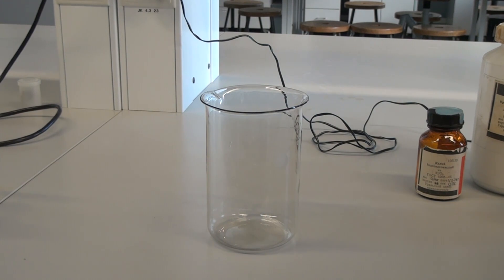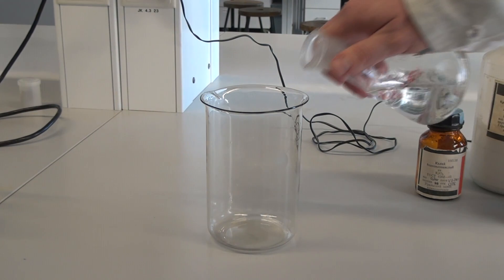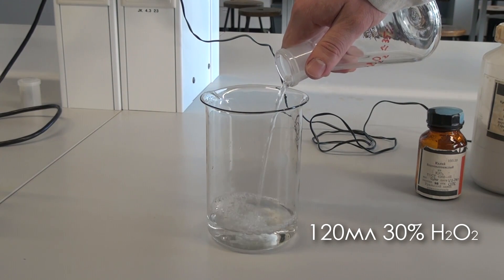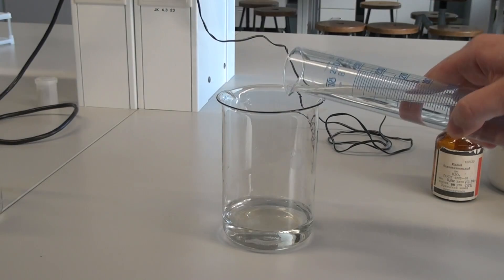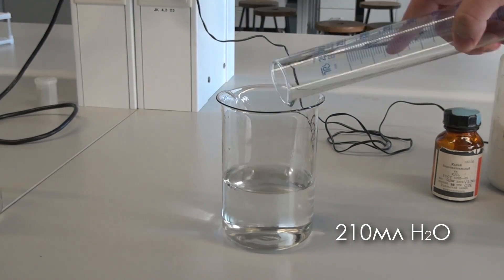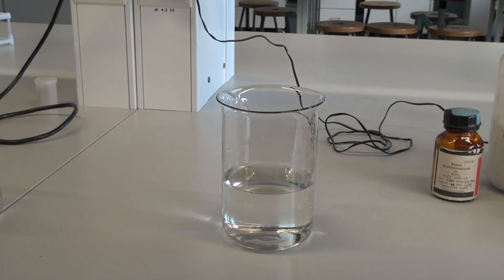The first solution is quite simple. Take a large beaker and pour in 120 milliliters of 30% hydrogen peroxide, then add 210 milliliters of distilled water. Here we have our first solution.